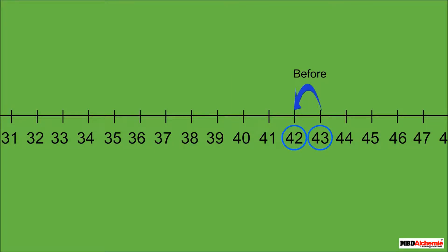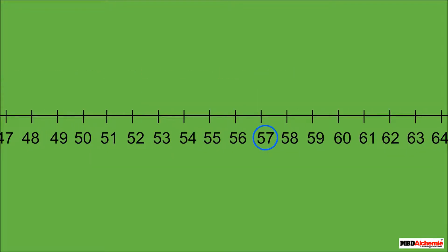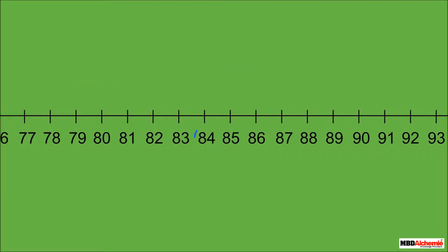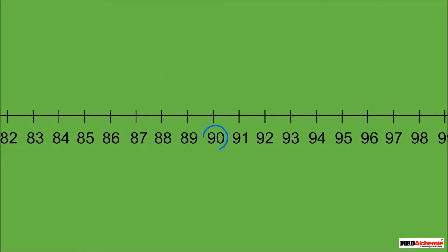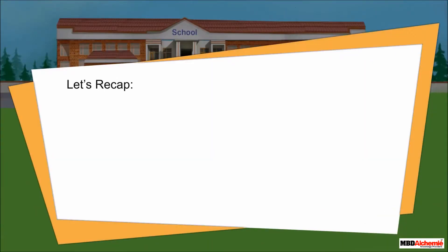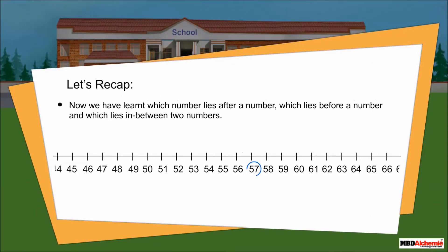Similarly, we can say: 42 comes before 43, 57 comes after 56, 79 comes in between 78 and 80, 84 comes before 85, 90 comes after 89, and 96 is in between 95 and 97.